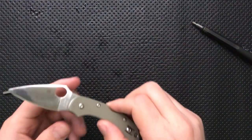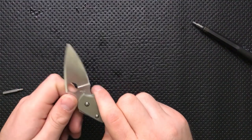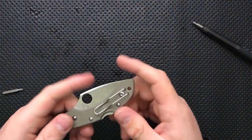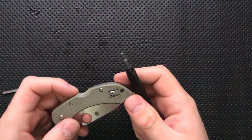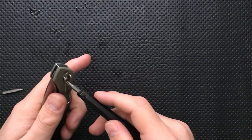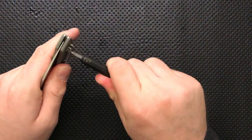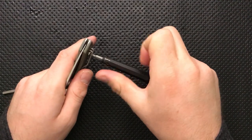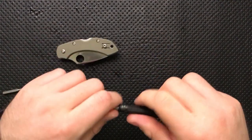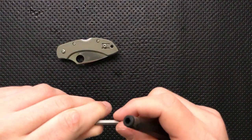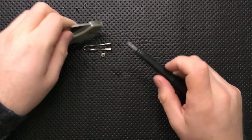Let's go on ahead and do some disassembling of this particular knife. Step one is gonna be to go ahead and remove this pocket clip. So, just gonna go up inside there with a Torx T8.